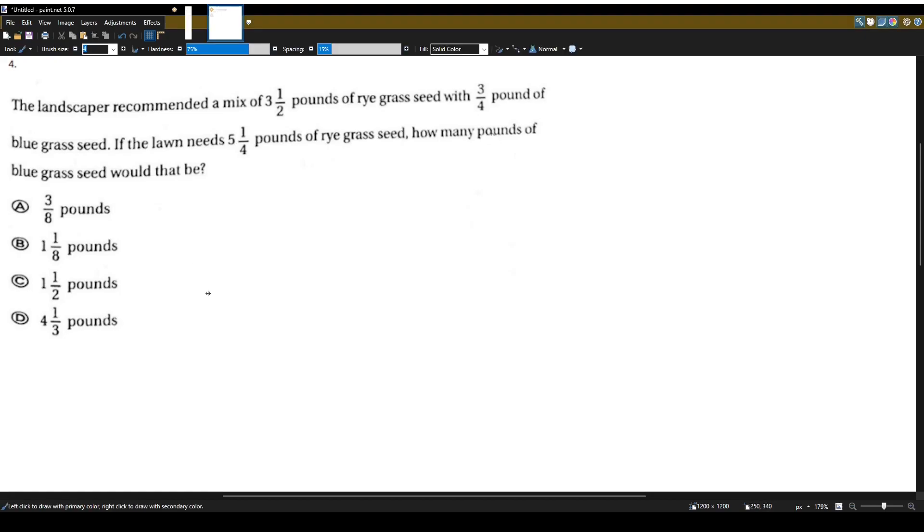The landscaper recommended a mix of three and a half pounds of rye grass seed with three-fourths pound of bluegrass seed. If the lawn needs five and one-fourth pounds of rye grass seed, how many pounds of bluegrass seed would that be?